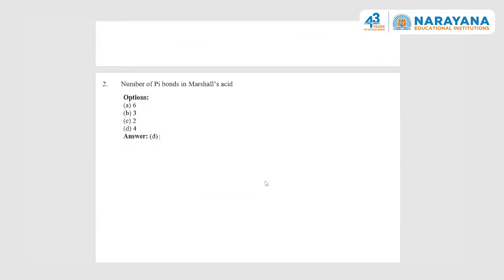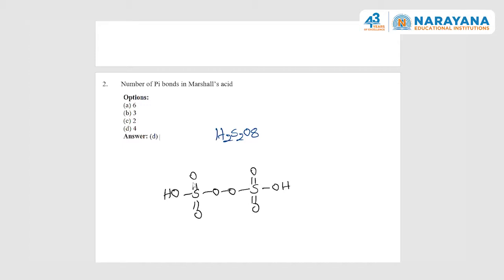Next question: Marshall's acid — the number of P–O bonds present in Marshall's acid. Marshall's acid is H₂S₂O₈, also called peroxodisulfuric acid. Its structure has S=O double bonds, S–O–H bonds, and a peroxy bond. If you count carefully, there are one, two, three, four — five P–O bonds. So the number of P–O bonds in Marshall's acid is four, and option four is correct.